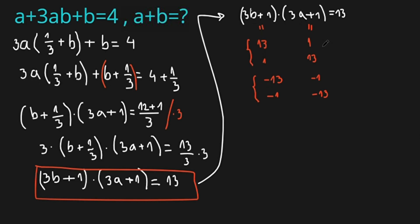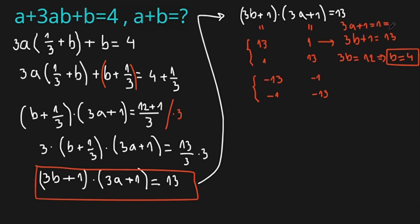We'll look at four different cases. In the first case, 3b + 1 = 13, so 3b = 12, meaning b = 4, and 3a + 1 = 1, meaning a = 0. In the second case, a = 4 and b = 0.